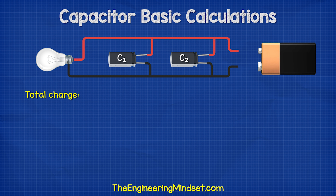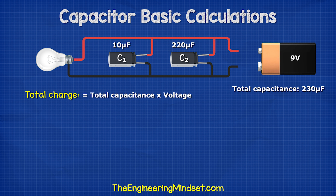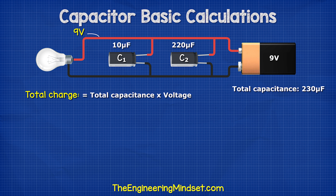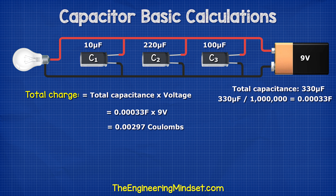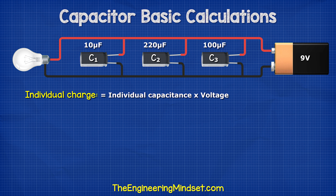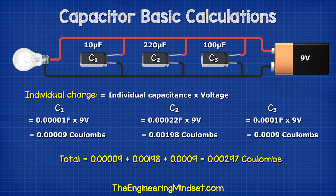The total charge stored in parallel circuits is charge equals the total capacitance multiplied by the voltage. Here we have a 9 volt battery and two capacitors with a total capacitance of 230 microfarads. As this is parallel, both capacitors are charged to 9 volts. Therefore, 230 microfarads multiplied by 9 volts gives us 0.00207 coulombs. With three capacitors we have 330 microfarads, giving 0.00297 coulombs. We can also calculate the charge of each capacitor individually using the same formula for each.